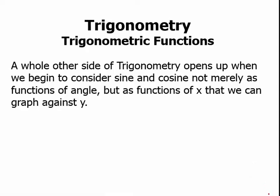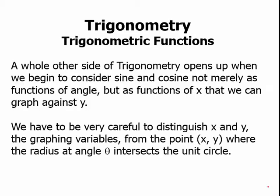Trigonometric functions. A whole other side of trigonometry opens up when we begin to consider sine and cosine not merely as functions of angle, but as functions of x that we can graph against y. We have to be very careful to distinguish between x and y — the graphing variables — on the one hand, from the point (x, y) where the radius at an angle theta intersects the unit circle.